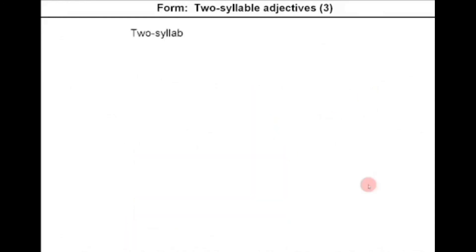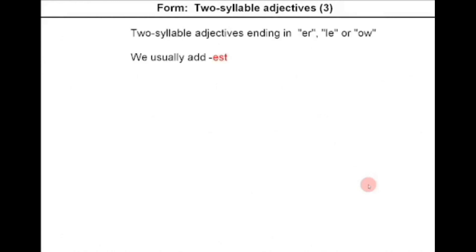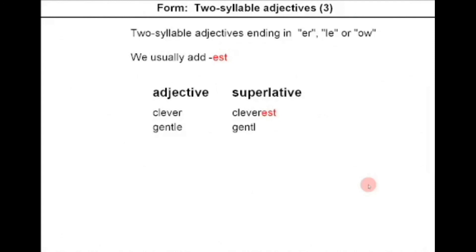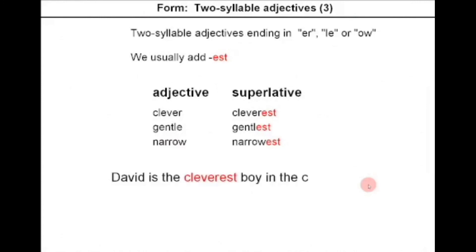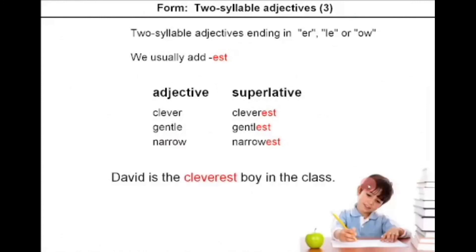For two-syllable adjectives ending in ER, LE, or OW, we usually add EST. For example: clever → cleverest, gentle → gentlest, narrow → narrowest. Example: David is the cleverest boy in the class.